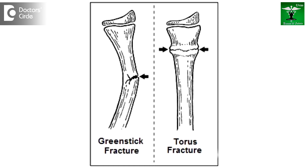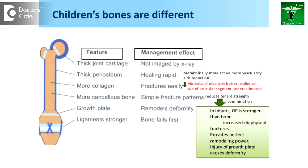Torus or bucket handle fractures are seen mostly around the lower end of the radius or lower end of the tibia. They can be managed by simple splinting for 3 to 4 weeks and the patient recovers very well. The important thing to assess in children's fractures is any injury to the growth plate, and treat accordingly.